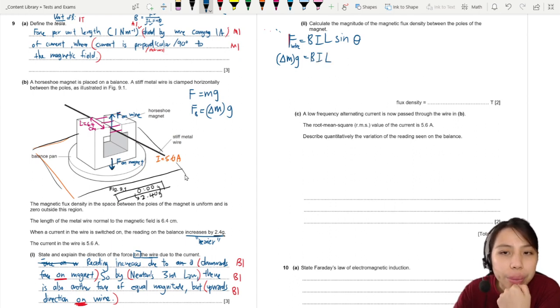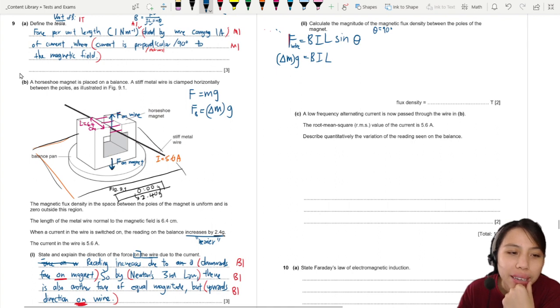Hey. Theta is 90 degrees. Sorry. If you look at the magnetic field, the purple color line and the wire, it's 90 degrees. So, we don't need to worry about this thing. It's gone. Sine 90 is 1.